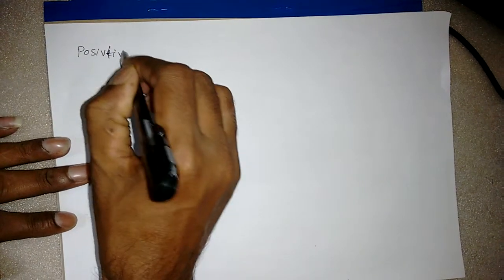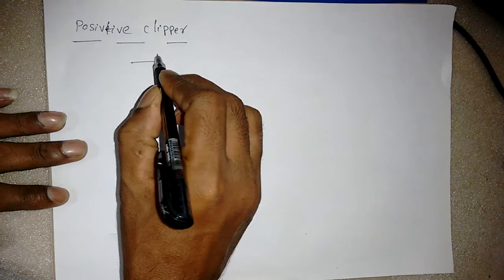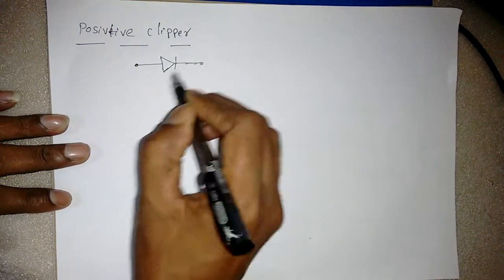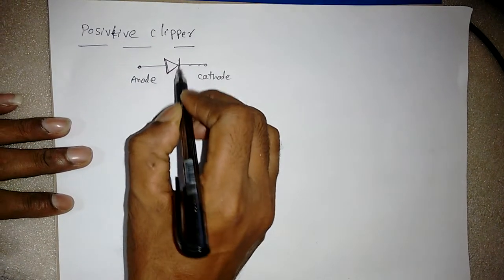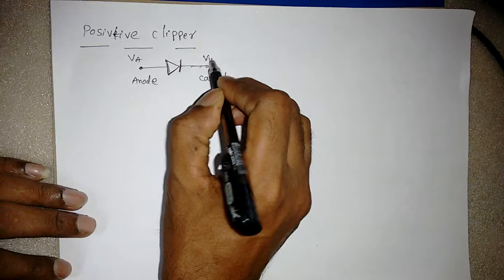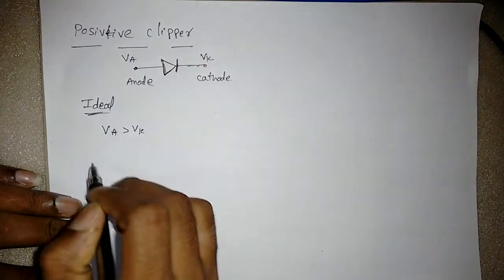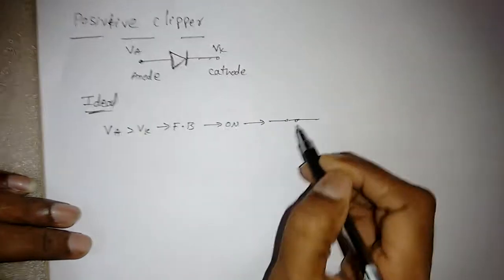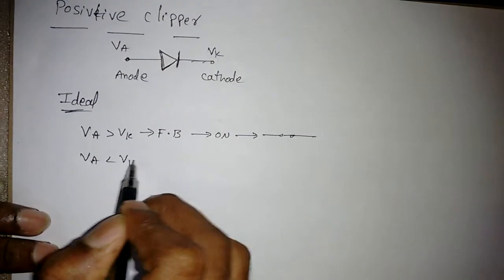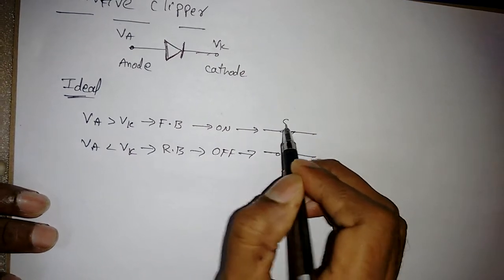In the previous lectures we covered the positive clipper. I'll briefly review the two basic rules for a diode. A diode is a two-terminal device with anode and cathode. For an ideal diode: if VA is greater than VK, the diode is in forward bias — that is the ON condition — and the equivalent model is simply a short circuit. If VA is less than VK, the diode is reverse biased, meaning OFF, and the equivalent model is an open circuit.